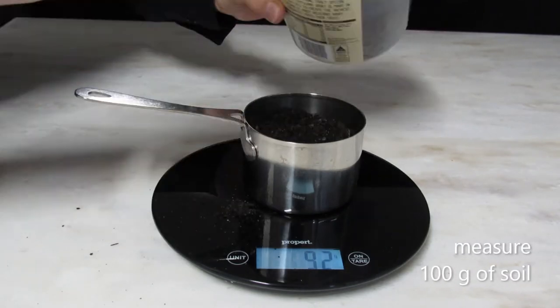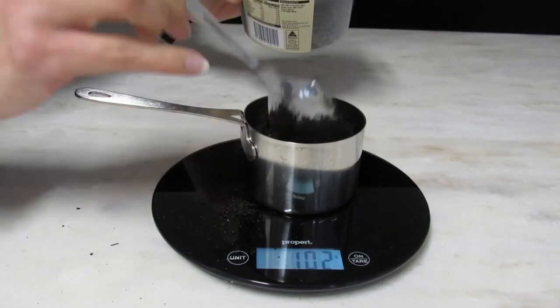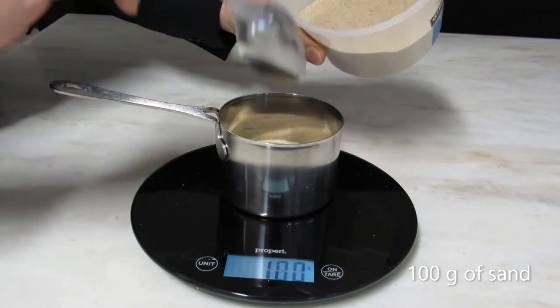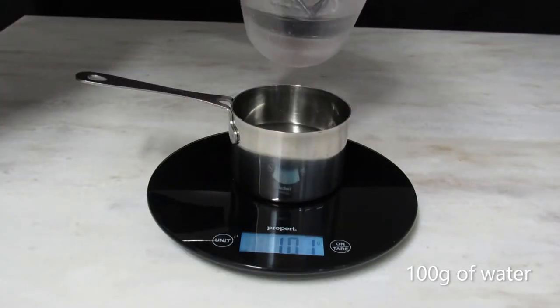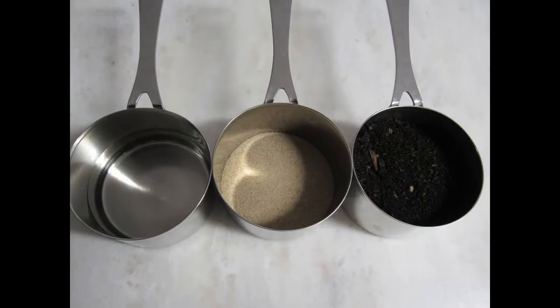Specific heat is a function of the mass of a substance, so we need to use the same mass of each material. I'm using 100 grams. Because soil is the least dense material, I have a far greater volume of soil than of sand or water.